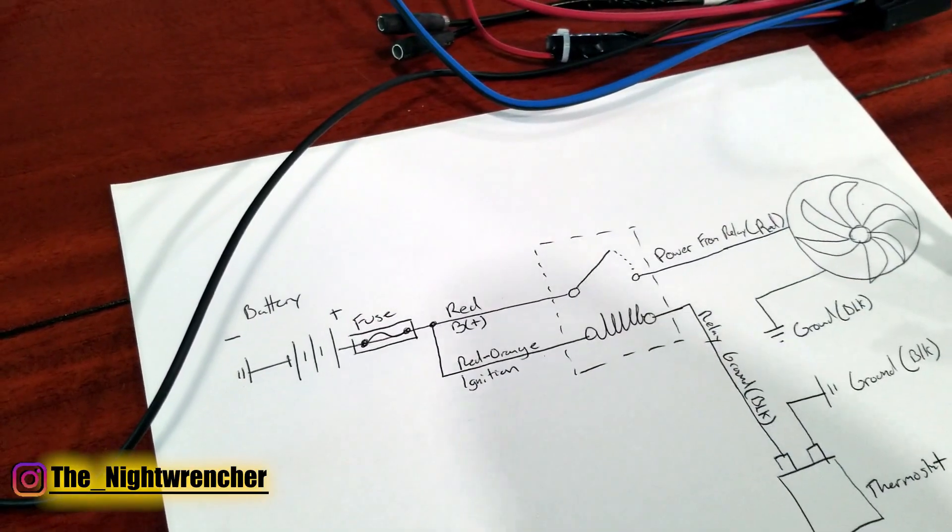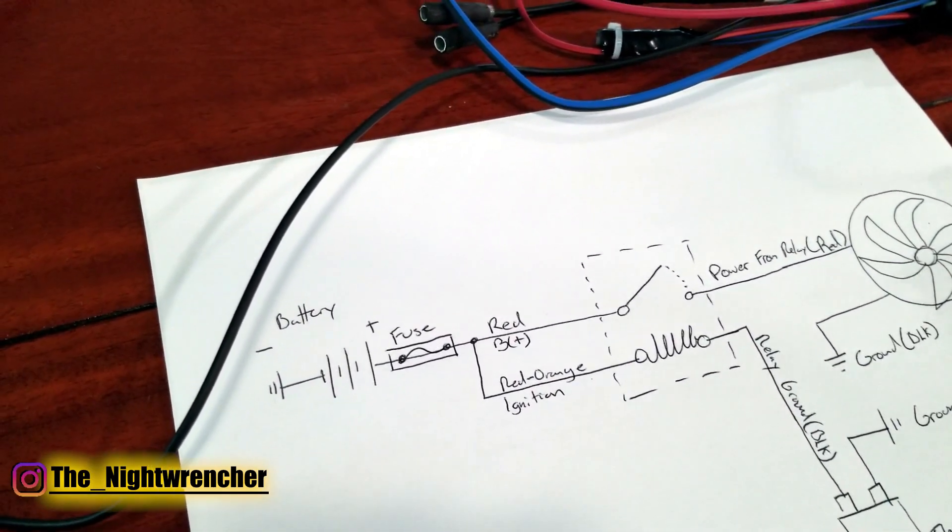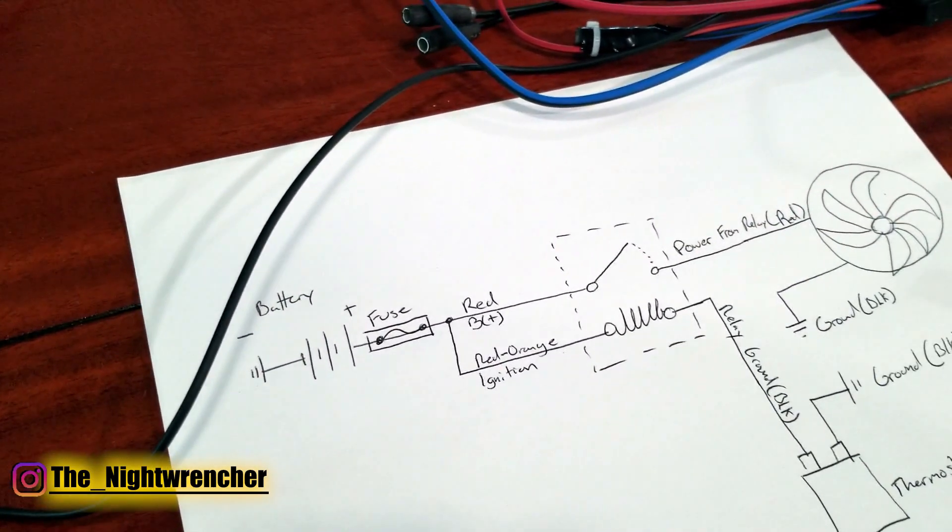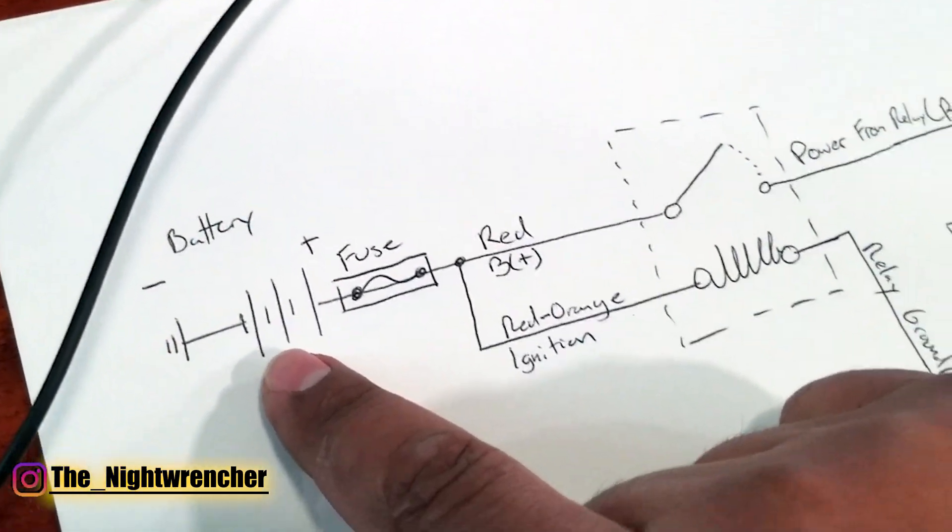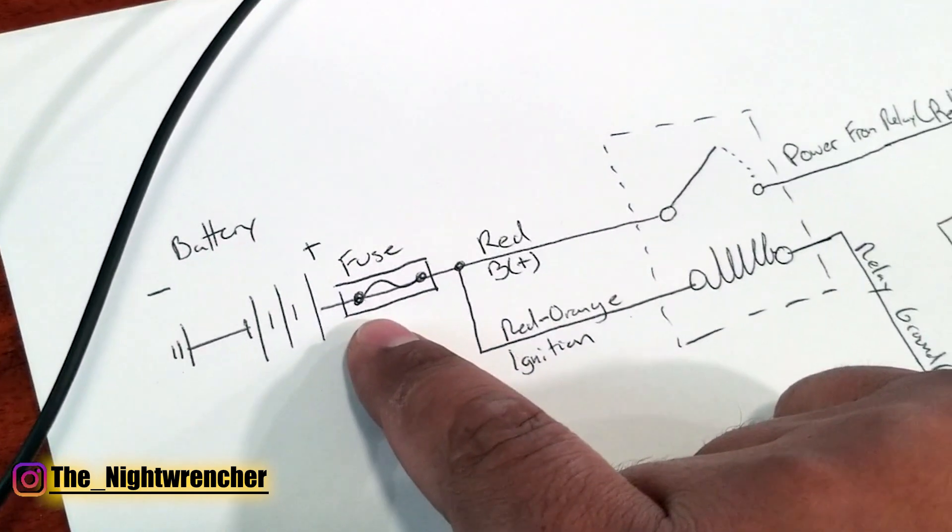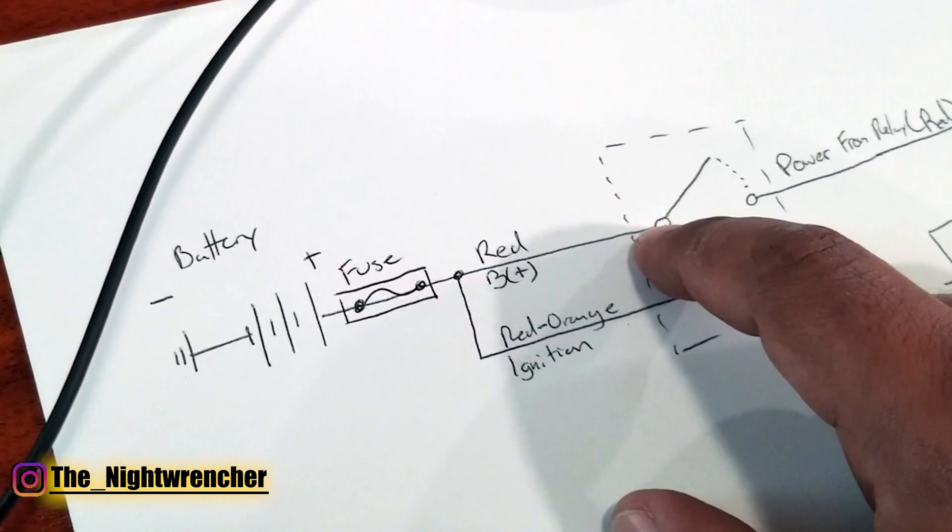Now we're going to be moving on to the electrical side of things. I misplaced the instructions so I decided to go ahead and draw my own. The way that it's set up from the factory is that you have the battery that goes into a fuse.